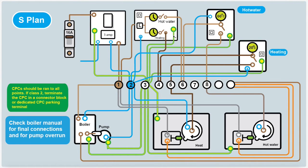So in class two, for example, you would put the CPC in a parking spot. There's sometimes a little CPC parking spot, a little earth nut to put it into, or if not, just put a little connector block so it doesn't move about and can't touch anything. So you always want a CPC to every point.